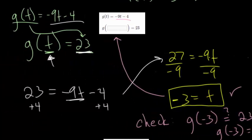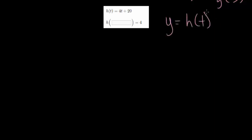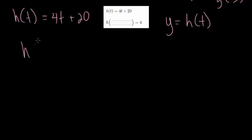Let's move to the next one where h(t) equals 4t plus 20, and we're told that when you plug in some mystery t value the function spits out a y value of 4. Remember that y and h(t) are interchangeable. We know h(t) equals 4t plus 20, and when we put in that mysterious t value the function equals 4. Our goal is to figure out what t value gives a function output of 4.